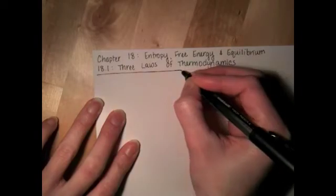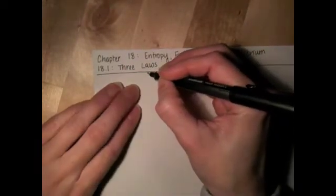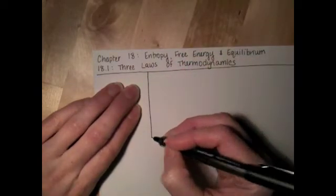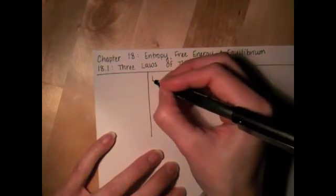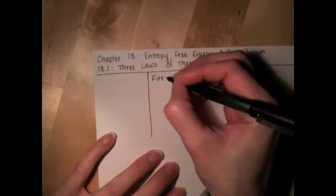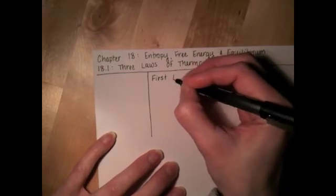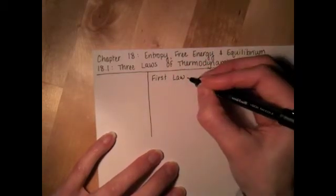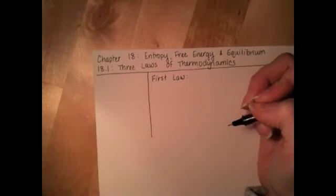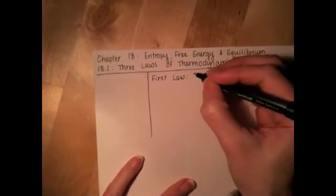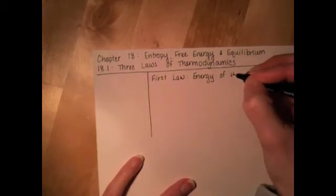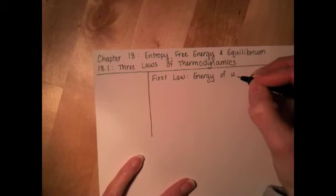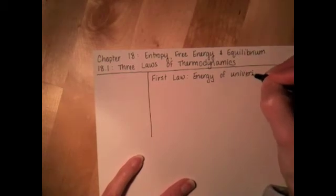Some of this stuff we've already talked about at other times. In 161, we talked a little bit about thermodynamics in Chapter 6, and if you've taken other science classes before, you've probably heard some, if not all, of these laws. The first law of thermodynamics, which we did talk about in Chapter 6, is that the energy of the universe is constant. Energy can neither be created nor destroyed, is a variation of the first law.